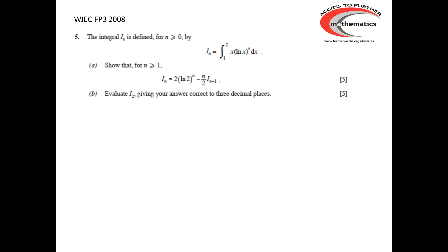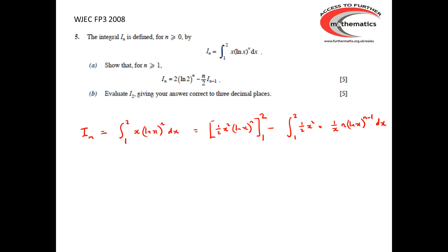Using integration by parts, it is easy to integrate the x — it's not at all easy to integrate ln(x) to the n. So we'll start off by integrating the x and leaving the ln(x) to the n alone, and then subtracting the integral of a half x squared times by the derivative of ln(x) to the n.